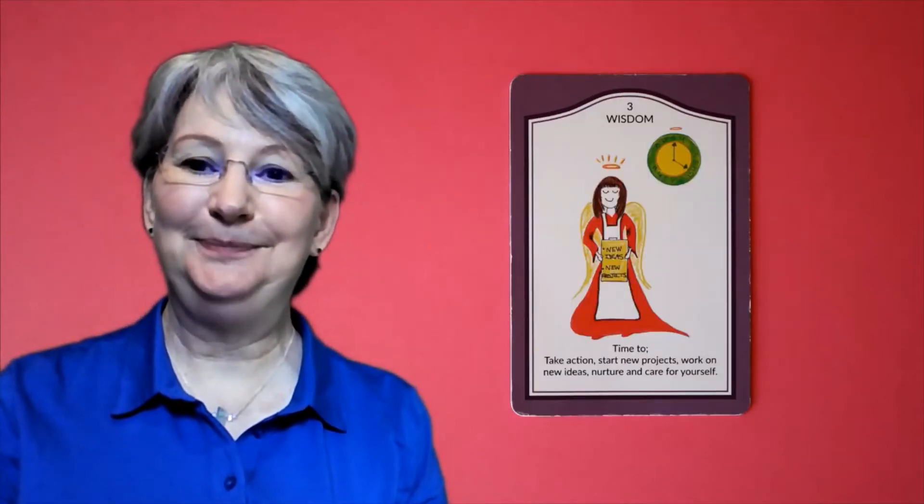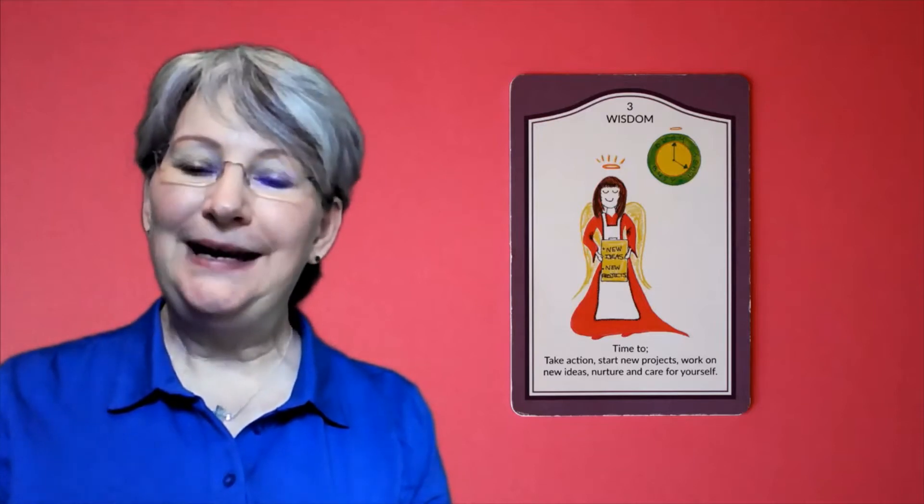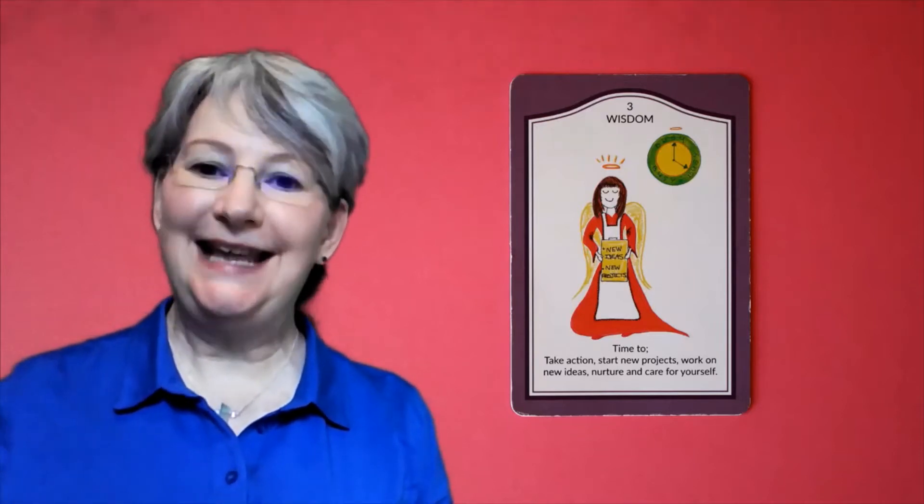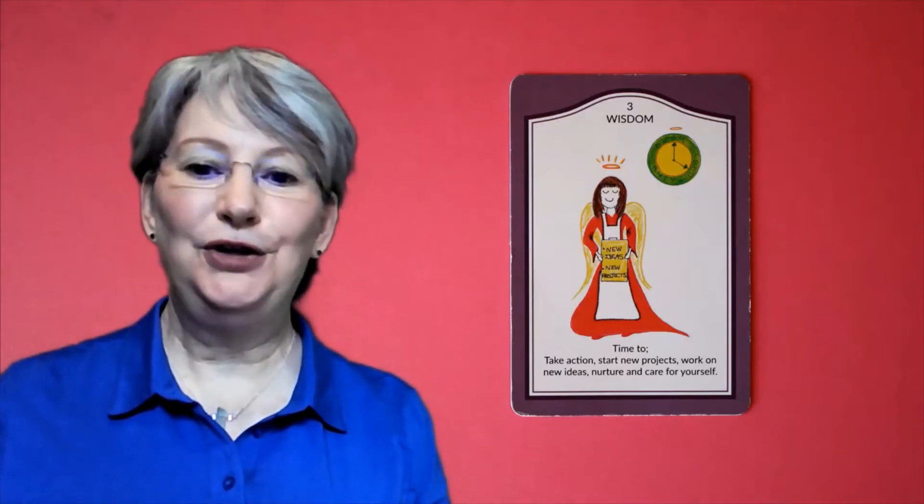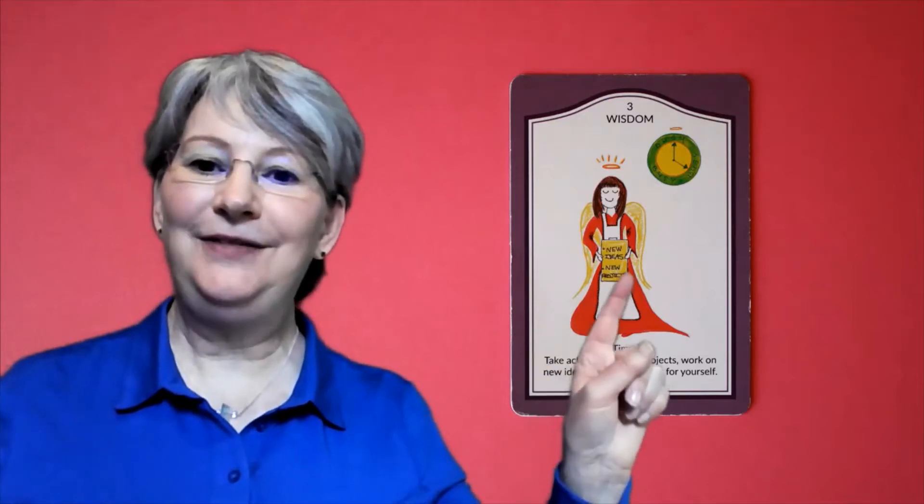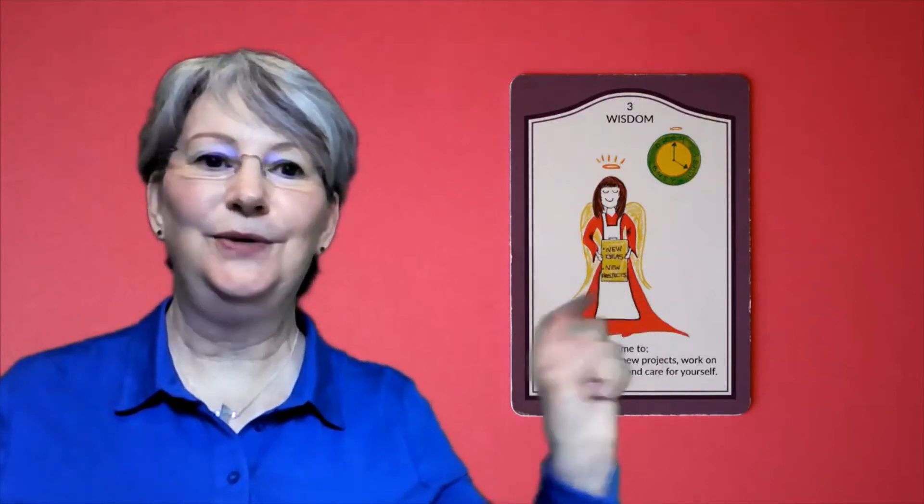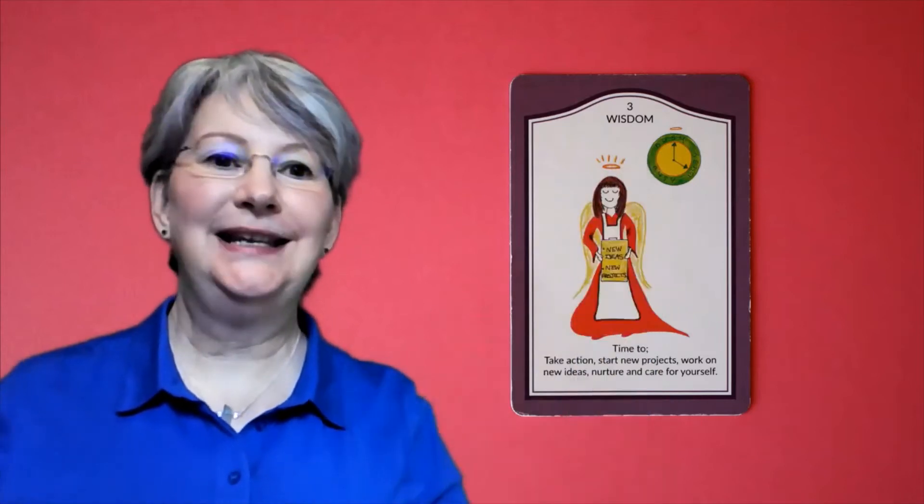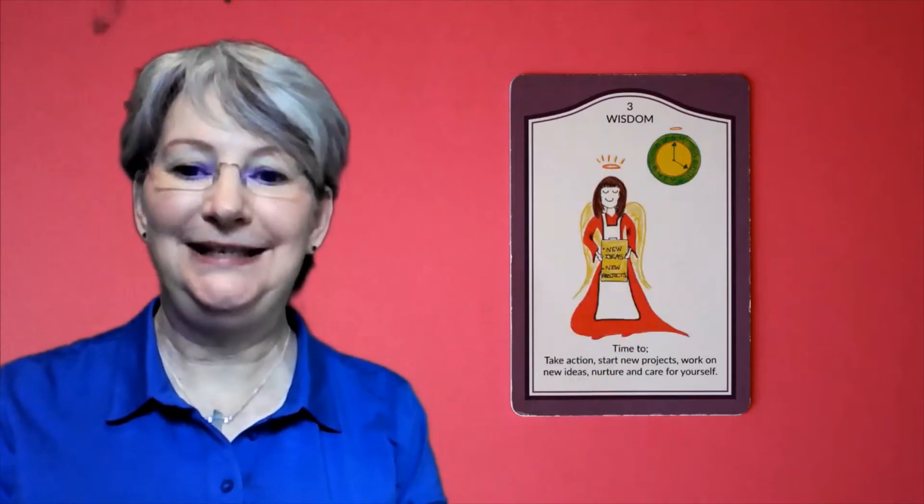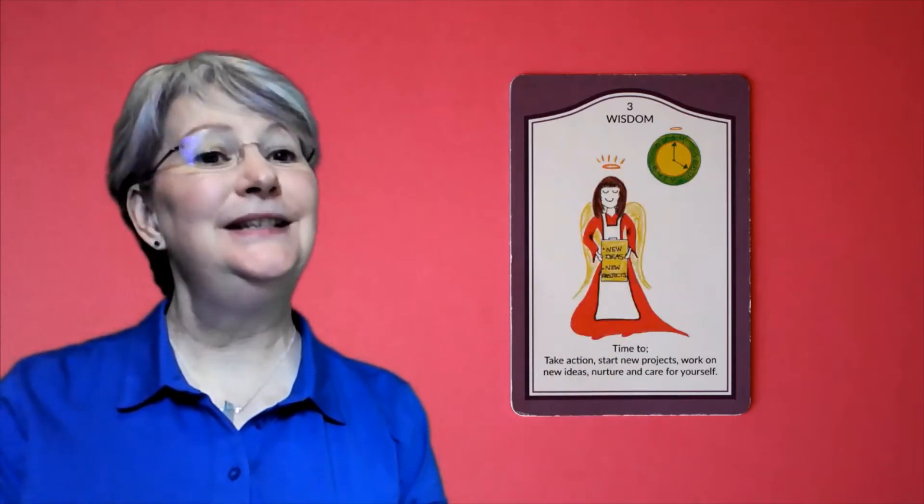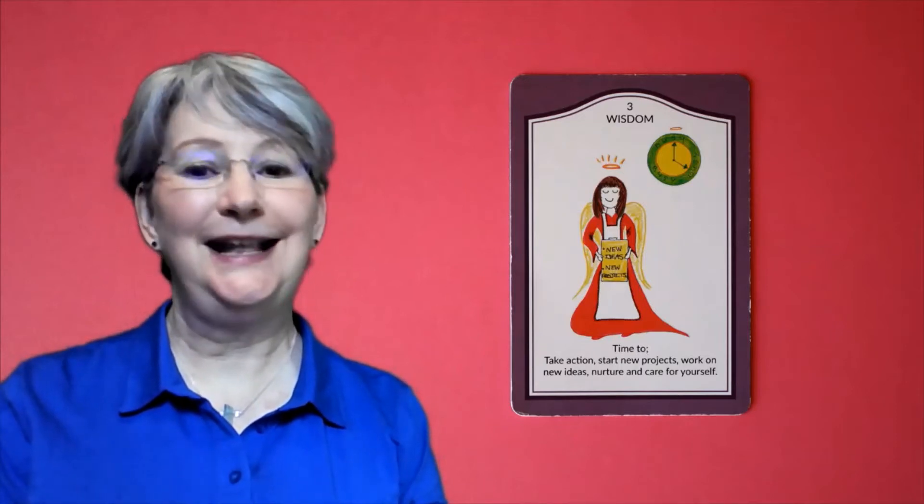Moving on to Taurus, we have the 3 of Wisdom. This is all about getting busy, taking action on those new projects. Here we have the angel with her clipboard, with her to-do list, and the clock says busy. Time to get busy for you, and remember to nurture and take care of yourself too whilst you're having this busy time starting new projects.